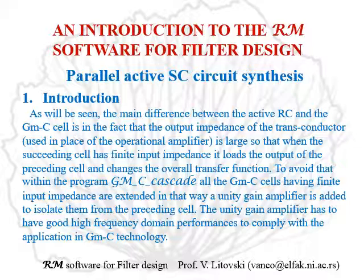The main difference between the active RC and the GMC cells is in the fact that the output impedance of the transconductor used in place of the operational amplifier is large. So that when the succeeding cell has finite impedance, it loads the output of the preceding cell and changes the overall transfer function. To avoid that, within the programmed GMC cascade, all the GMC cells having finite input impedance are extended in that way — a unity gain amplifier is added to isolate them from the preceding cell.